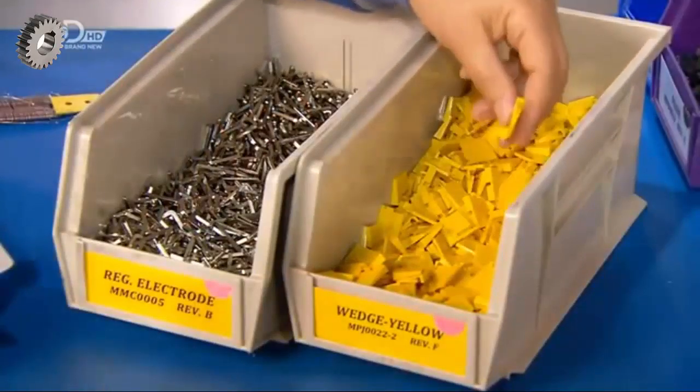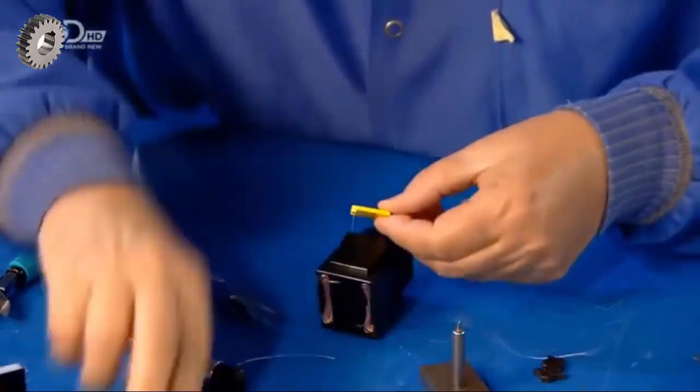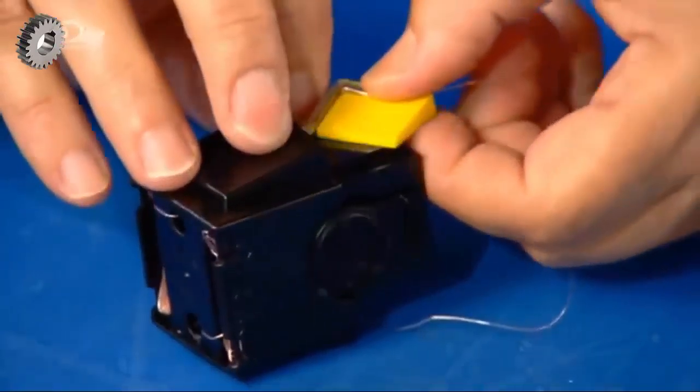He selects plastic wedges, one for each wire, and wraps the other end of the wires around it. He attaches electrodes to allow the flow of electricity to the cartridge.